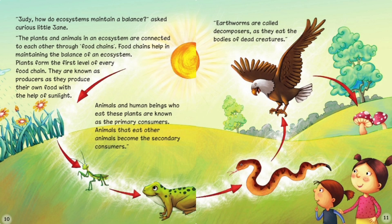'Judy, how do ecosystems maintain a balance?' asked curious little Jane. The plants and animals in an ecosystem are connected to each other through food chains. Food chains help in maintaining the balance of an ecosystem. Plants form the first level of every food chain. They are known as producers as they produce their own food with the help of sunlight. Animals and human beings who eat these plants are known as the primary consumers. Animals that eat other animals become the secondary consumers. Earthworms are called decomposers as they eat the bodies of dead creatures.